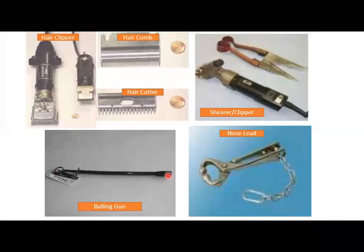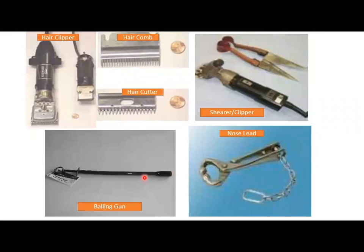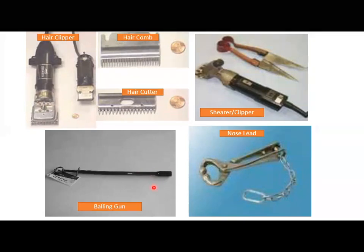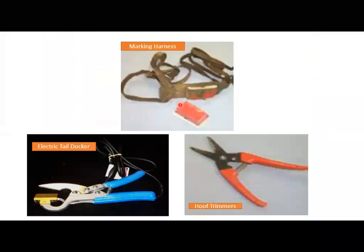The next one is a balling gun, used for giving pills to animals. You insert the pill into the end of the tube, and then with the plunger you press it. You insert this tool into the mouth of the animal, get it to the back of the mouth, push the plunger, and this deposits the pill into the throat.